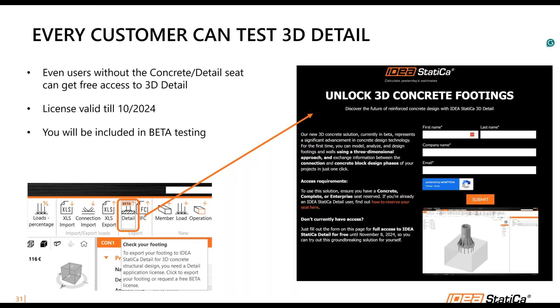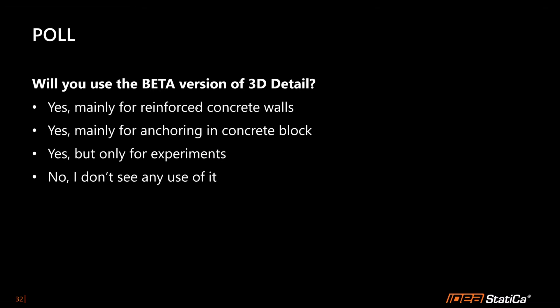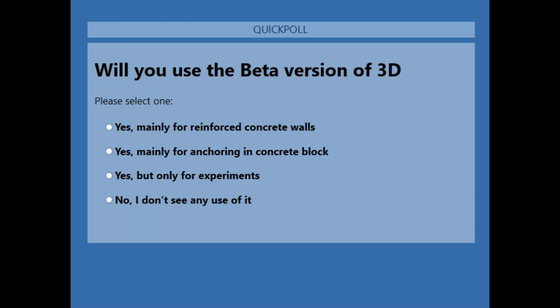To access the 3D Detail beta: you can click the Export to Detail button in your Connection application and you'll be redirected to a form — just fill in your name and company name and you'll get temporary license access. Or you can use the direct link we'll share in the chat. Now I'd like to ask: will you use the beta version of 3D Detail, and for what — reinforced concrete walls, anchoring in concrete block, experiments, or no use?